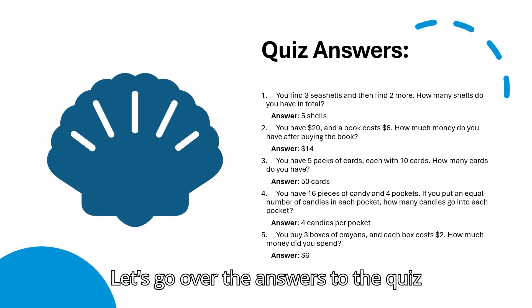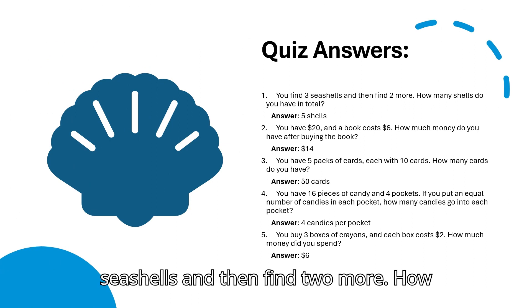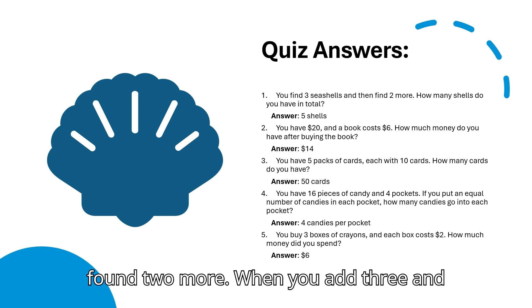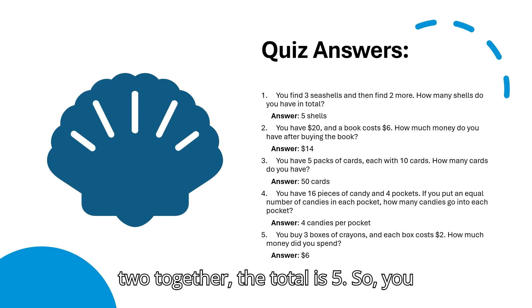Let's go over the answers to the quiz questions. Question 1: You find 3 seashells and then find 2 more. How many shells do you have in total? The answer is 5 shells. Here's why. You started with 3 shells, and then you found 2 more. When you add 3 and 2 together, the total is 5. So, you now have 5 seashells.